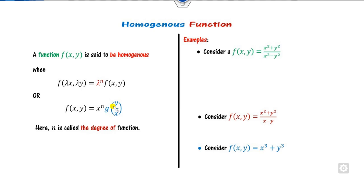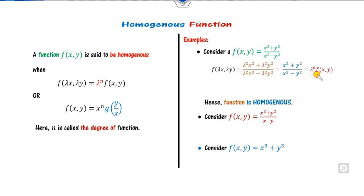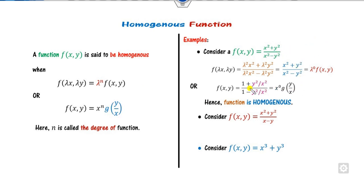For example, if I take these three examples, considering f(lambda x, lambda y): the lambda squared terms are common and cancel out, leaving it still in the form of f(x, y), where lambda is to power 0. Or, your target is to express each term in the form of y upon x — divide numerator and denominator by x squared. It can be written as x raised to power n times g(y/x). Since both properties are satisfied, this is homogeneous.